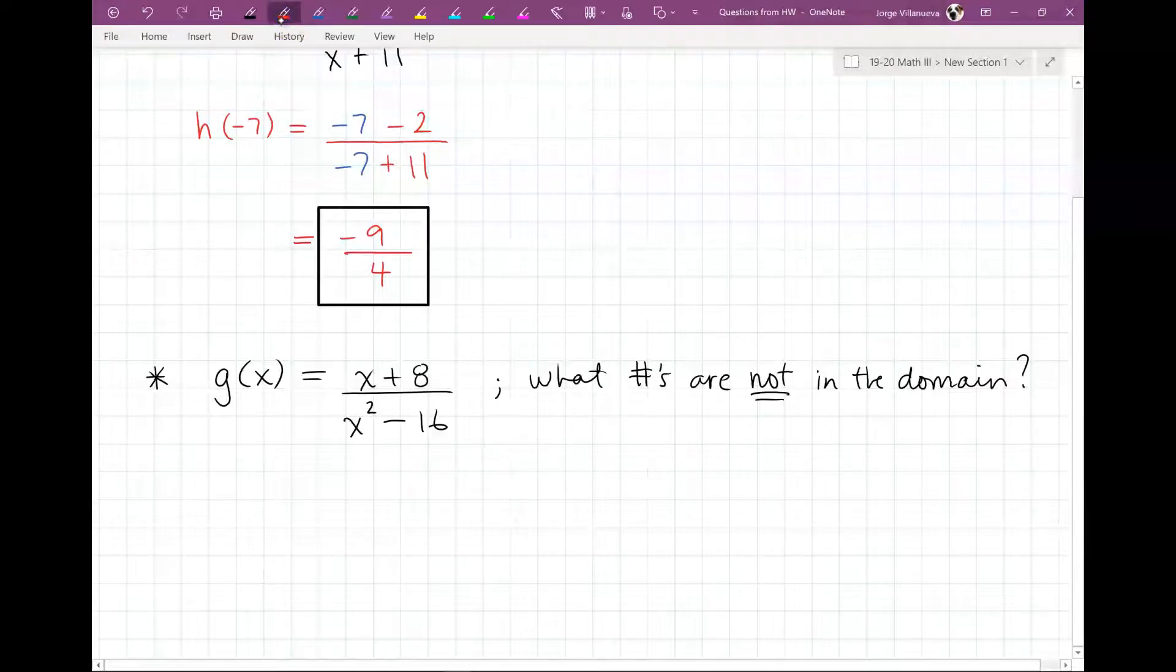So x squared minus 16 equals zero would be bad. Let's find out what makes it zero. Well, I'll add 16 to both sides, so that gives me x squared equals 16.